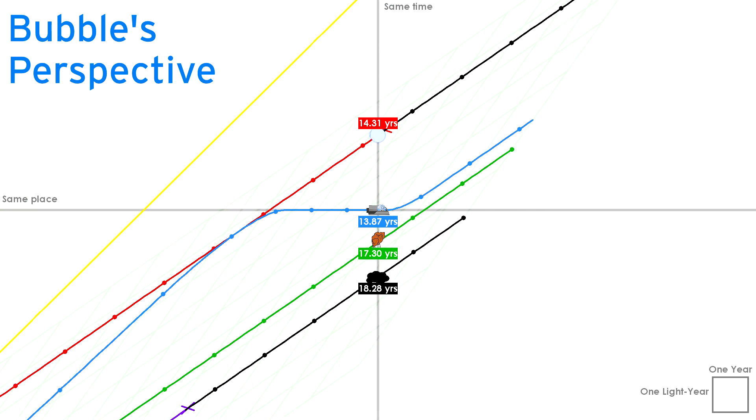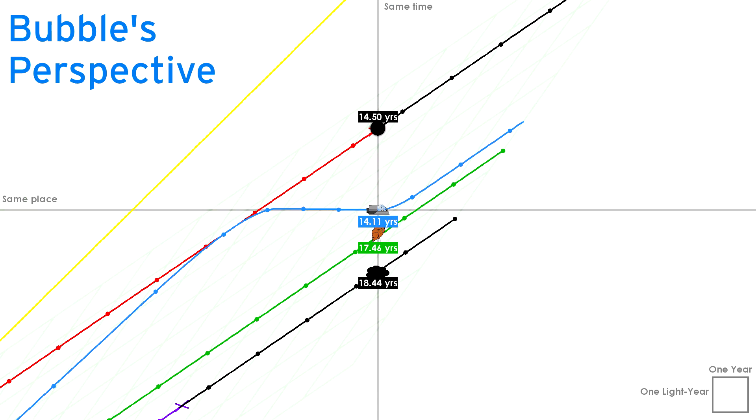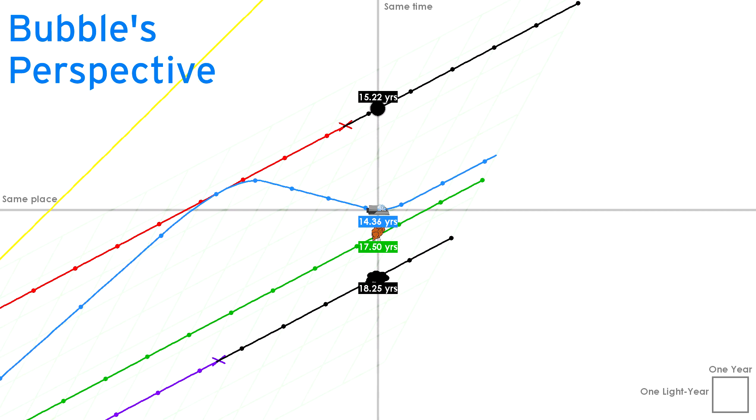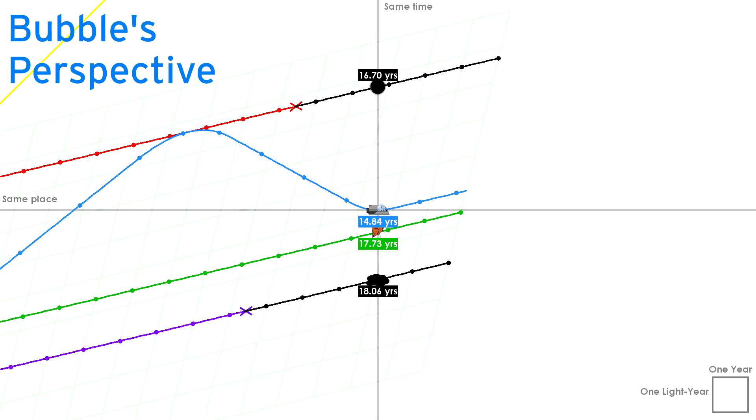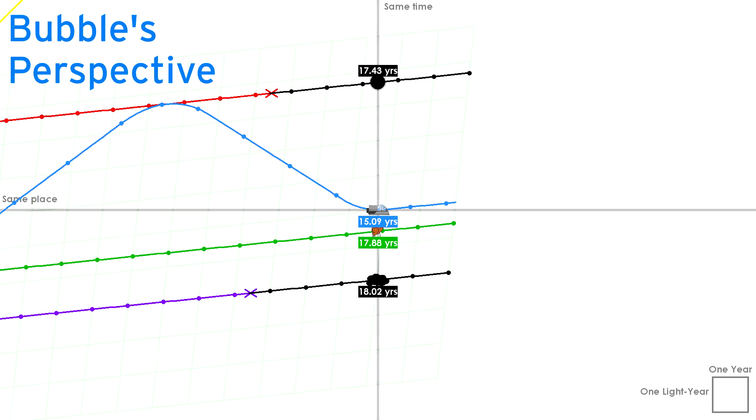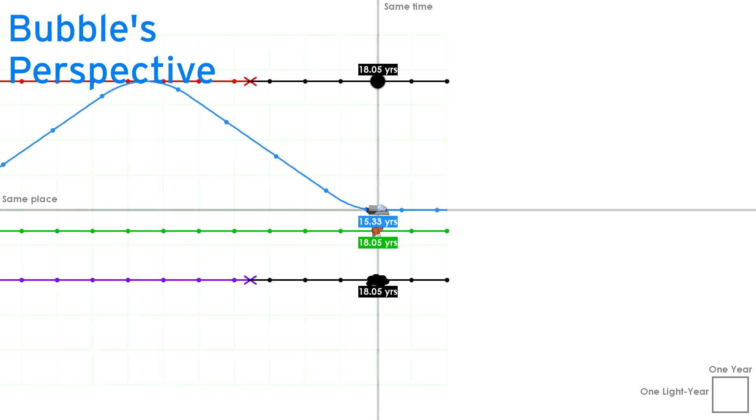However, Bubble's last deceleration is so extreme, Leafy's aging slows dramatically, and time appears to go backward for the more distant and desolate Yoyoland. When Bubble slows to a complete stop relative to the other objects, she discovers that Leafy, Yoyoland, and Ice Cube's star are once again the same age, and the only evidence left that Bubble made her round trip at all is the fact that she's nearly three years younger.